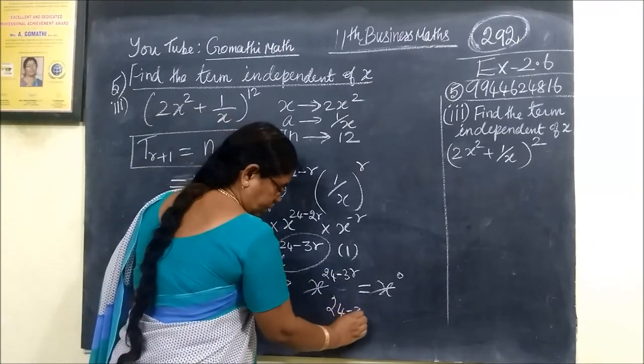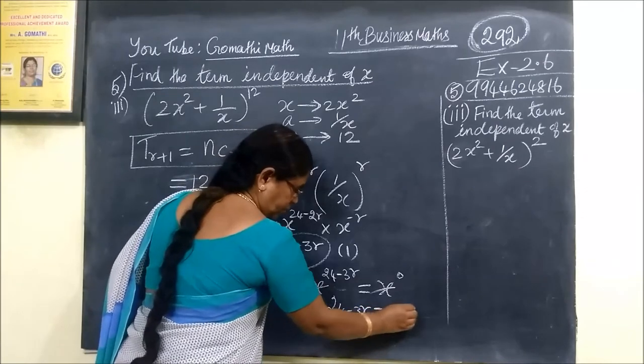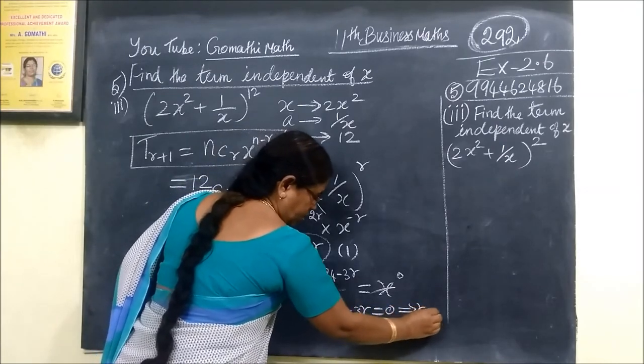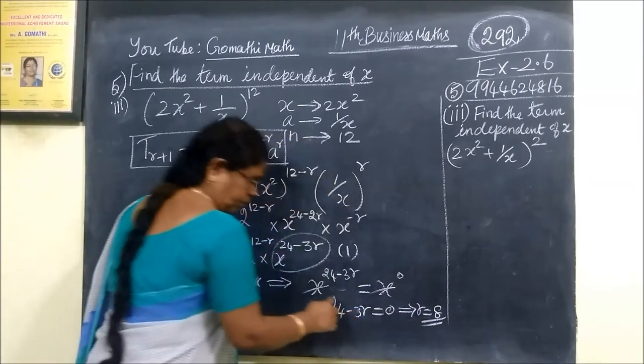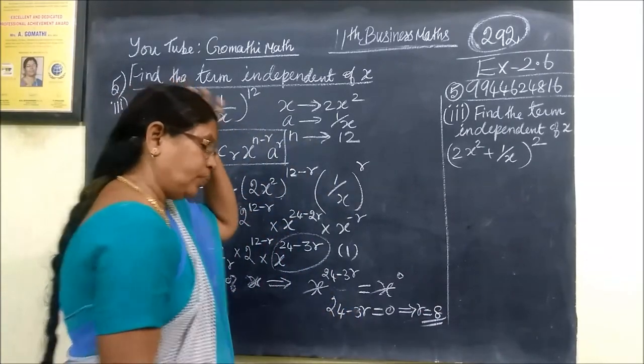So 24 minus 3R equal to 0. This implies R equal to 8. R equal to 8.